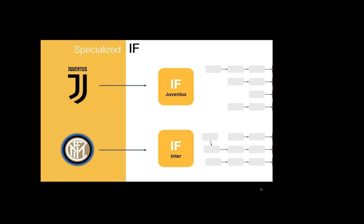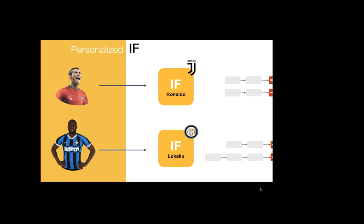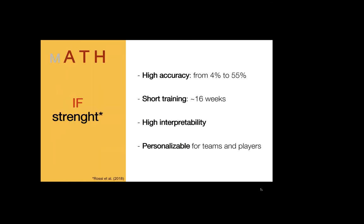This model is also specializable because we can train it for different teams — since different teams have different requirements, different players, different coaches, and different season demands. If we have enough data, we could even train this model for each individual player, because the demands for one player could be completely different from another. This model is accurate, requires only a short training period to stabilize, is highly interpretable, and is personalizable.